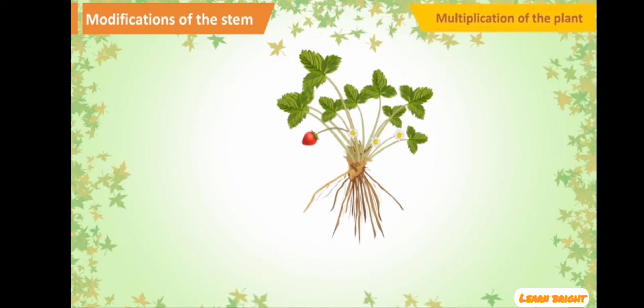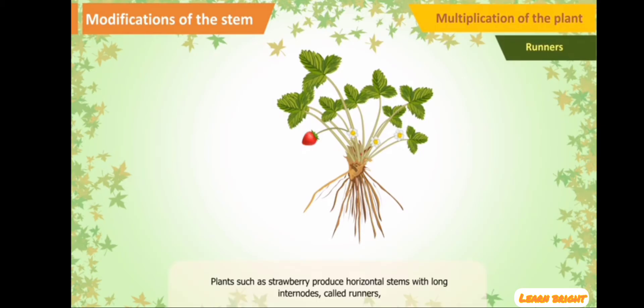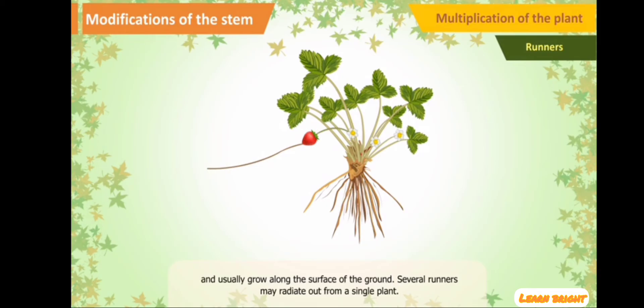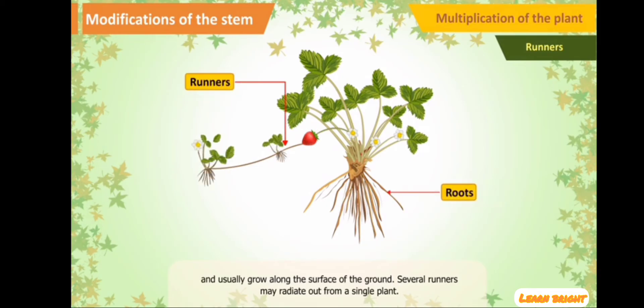Multiplication of the plant: Plants such as strawberry produce horizontal stems with long internodes called runners, which usually grow along the surface of the ground. Several runners may radiate out from a single plant.